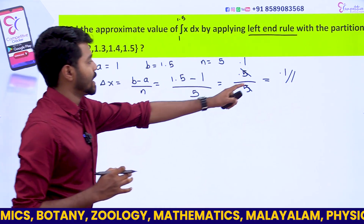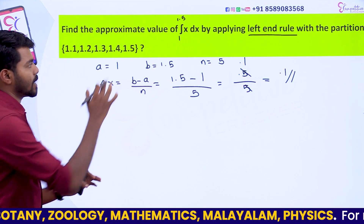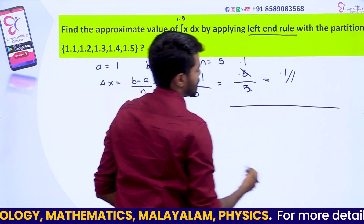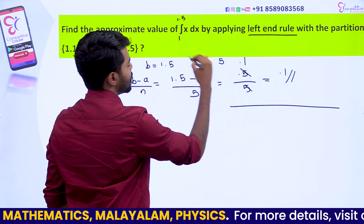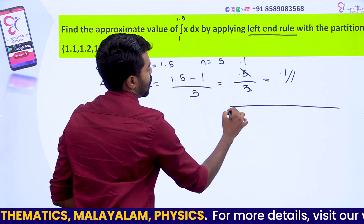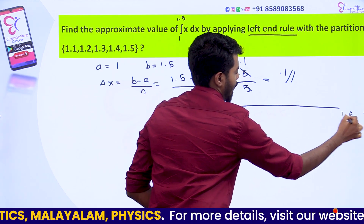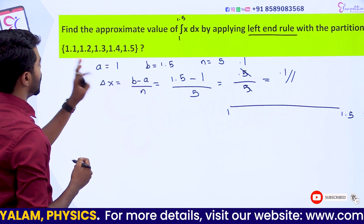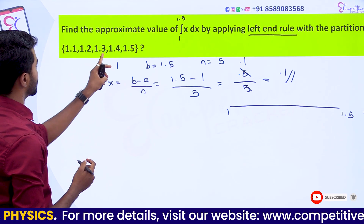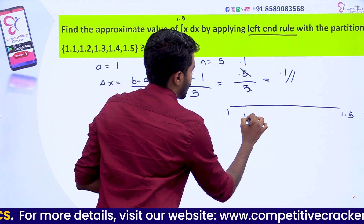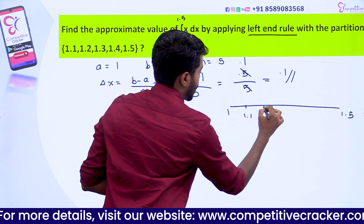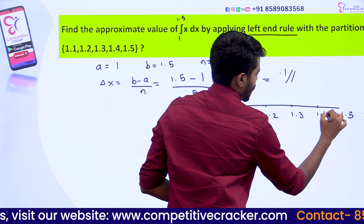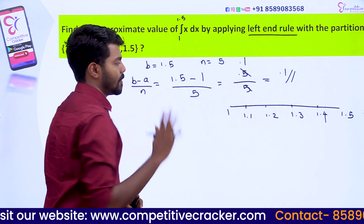Now let's look at the partition values. The values are: 1.0, 1.1, 1.2, 1.3, 1.4, and 1.5.